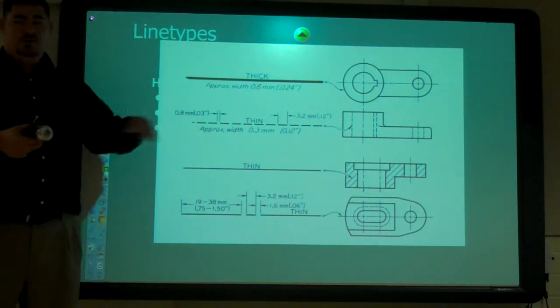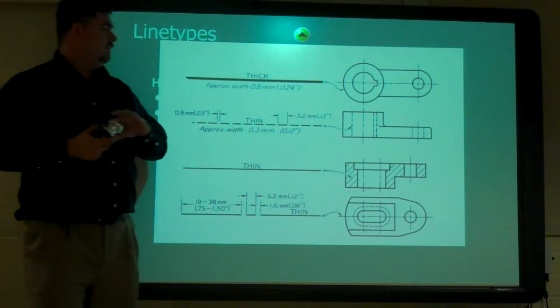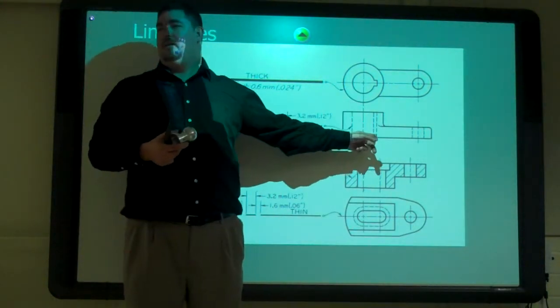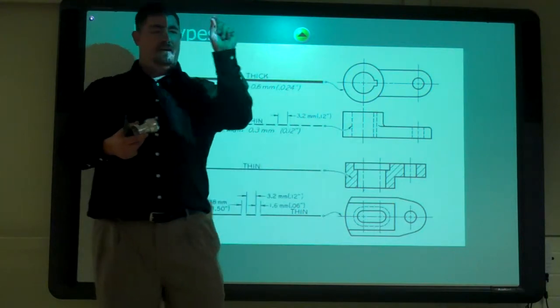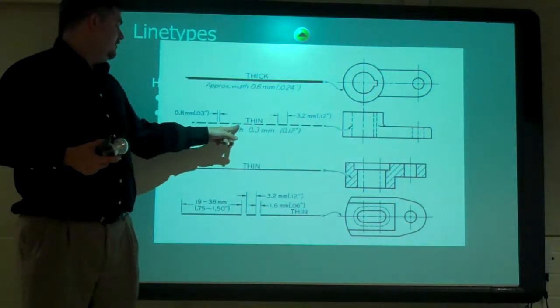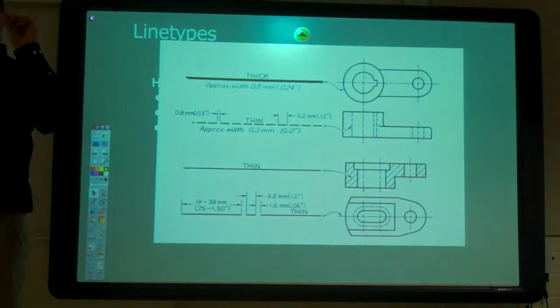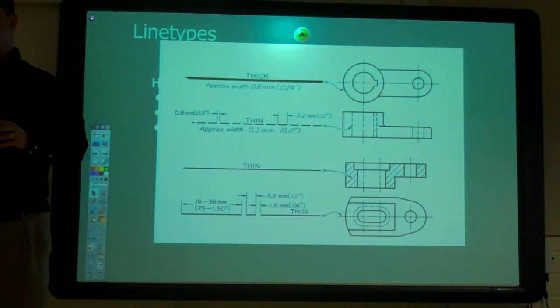We have hidden lines, which is all the inside stuff. Here's showing where that hole is on the inside. It's thin. It's got dashes that are about an eighth of an inch long with a little bit of space between them.